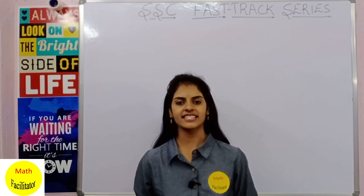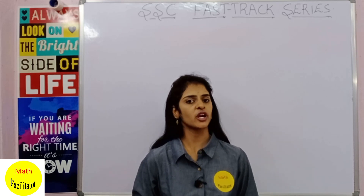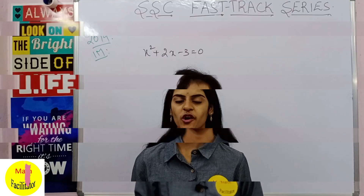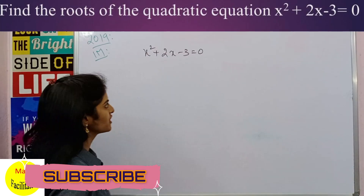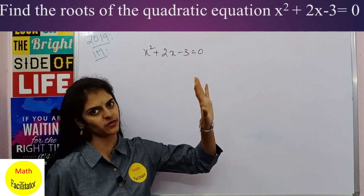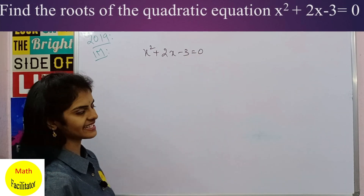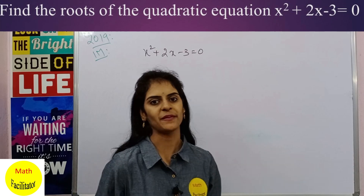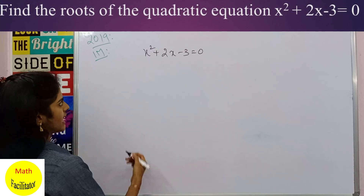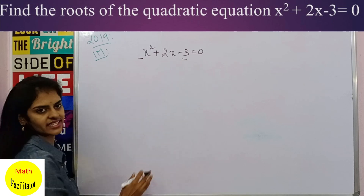So now let us quickly start this session. In today's video we are going to deal with Chapter 5: Quadratic Equations. Our first question is: find the roots of the quadratic equation x² + 2x - 3 = 0. This question was given in 2019 and is a one-marker. Now, you will multiply the x² coefficient and the constant term.